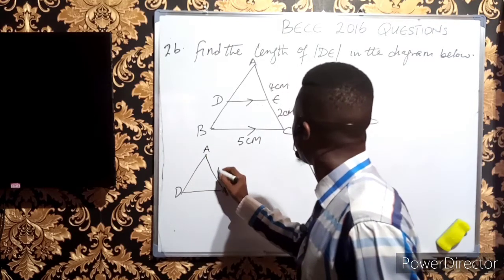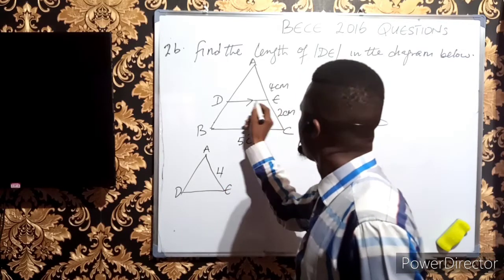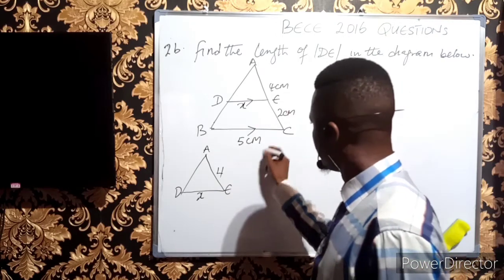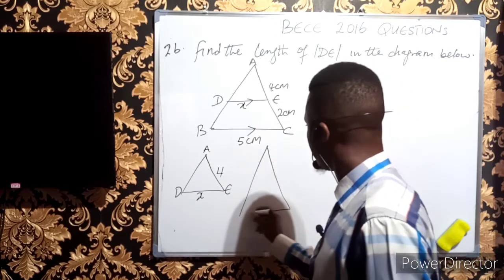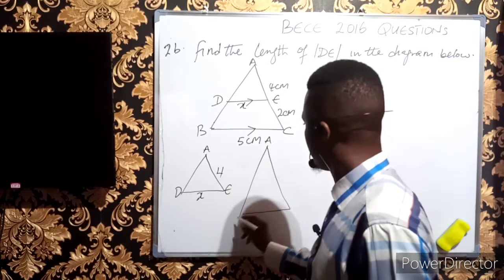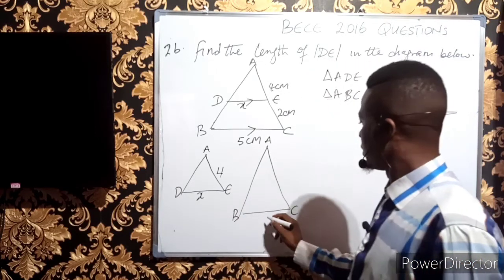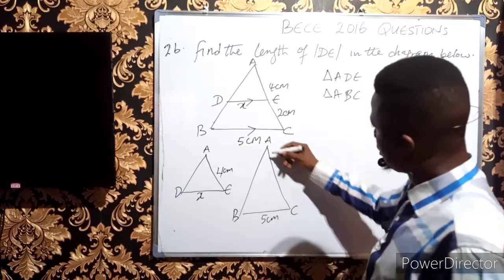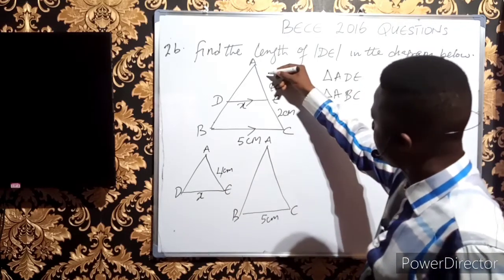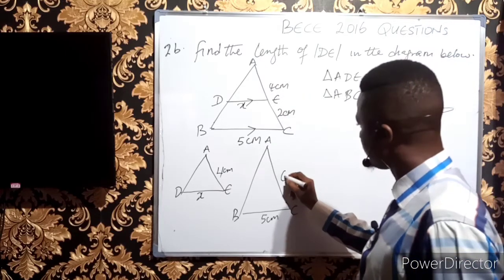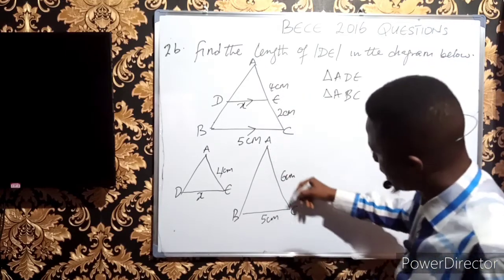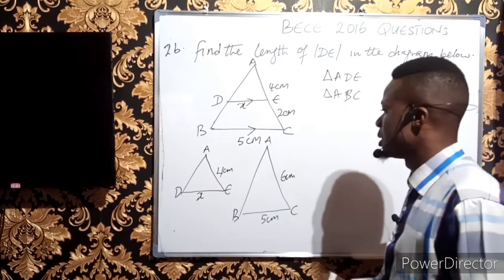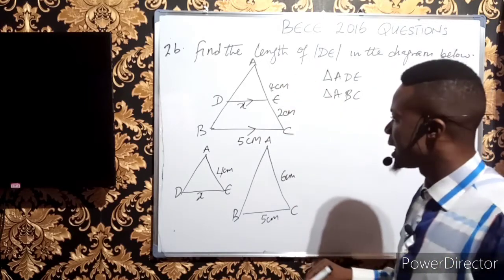I can draw these triangles separately. The smaller triangle ADE has one side of 4 cm, and we need to find DE (let me call it x). The bigger triangle ABC has here 5 cm, and the total length AC is 4 + 2 = 6 cm. If two triangles are similar, the ratio of their corresponding sides are equal.